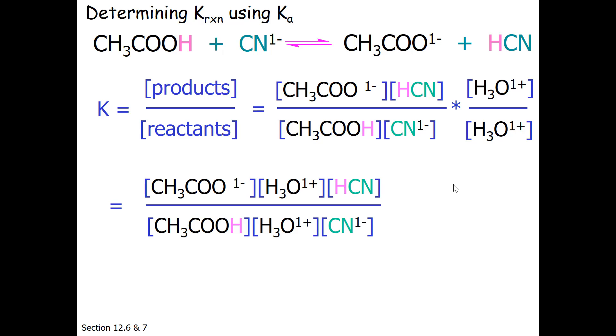Now what I'm going to do is do a little bit of grouping. I'm going to group the acetate and the hydronium concentration together. This turns out to be equal to the Ka expression of the strength of acetic acid relative to water.